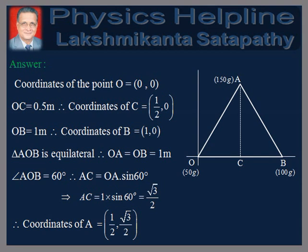Now, angle AOB is equal to 60 degrees. Therefore, AC is equal to OA × sin 60, which is equal to √3/2. Therefore, coordinates of A is equal to (1/2, √3/2).